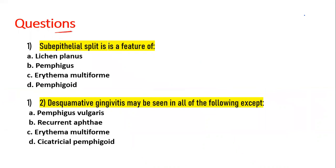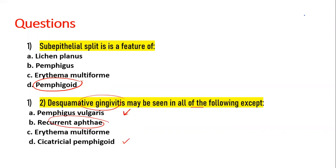Review questions: Sub-epithelial split is a feature of — answer: pemphigoid. Desquamative gingivitis may be seen in all of the following except — the correct answer is recurrent aphthae, because desquamative gingivitis is seen in pemphigus vulgaris, mucous membrane pemphigoid, and erythematous lichen planus, but not in recurrent aphthae.